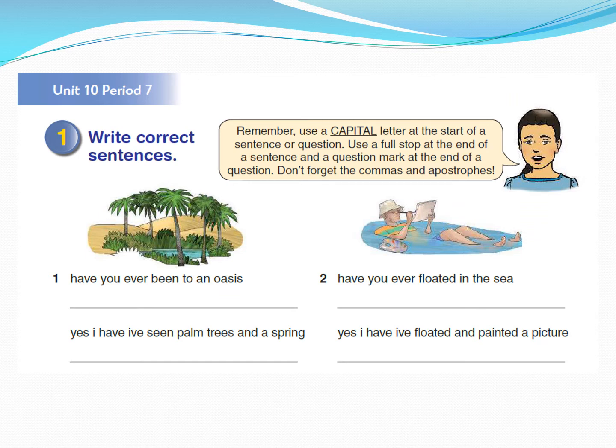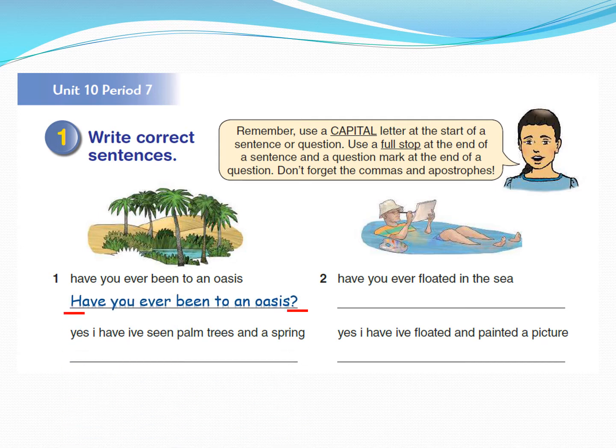First activity: write correct sentences. We should write these sentences correctly. We have to use punctuation marks, capital letters, full stops, and also the apostrophe. Let's do the first one: 'Have you ever been to an oasis?' The first thing you have to decide is whether it is a question or an answer or a sentence. It's a question — it starts with a helping verb.